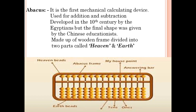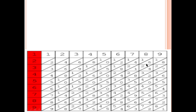The Abacus is made of a wooden frame divided into two parts called Heaven and Earth. The circular pieces on the rods are called beads. The upper part is called Heaven and the lower part is called Earth. Using this frame, one could calculate — but only addition and subtraction could be performed.